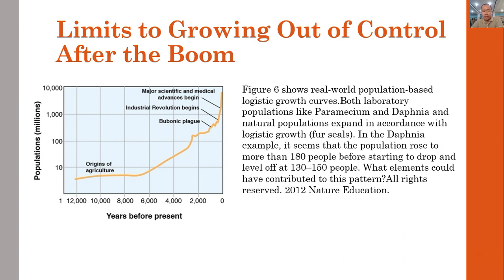Figure 6 shows real-world populations based on logistic growth curves. From origins in public culture 12,000 years before our time, the population started at only about 10 million. One example shows that the population rose to more than 180 individuals before starting to drop back to around 130. What elements could have contributed to this pattern?